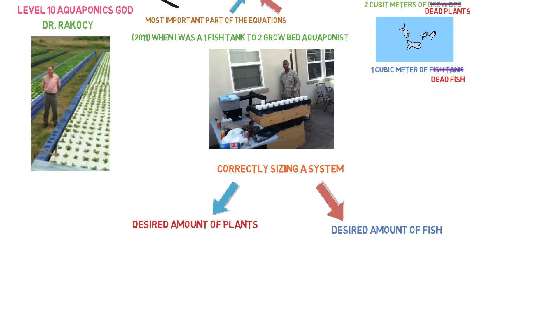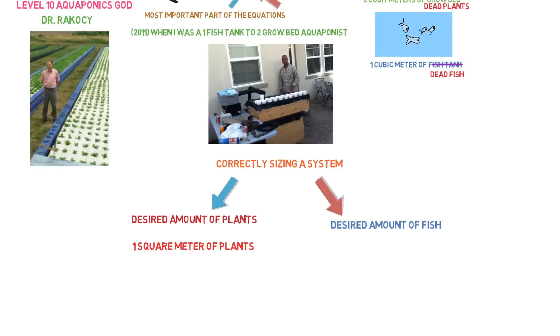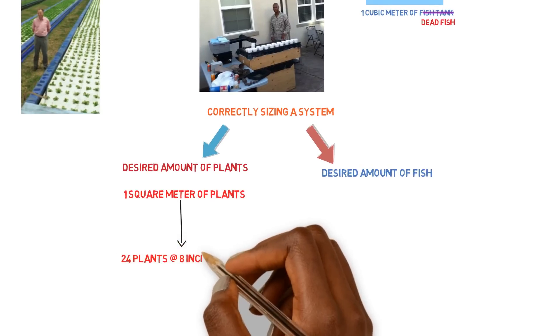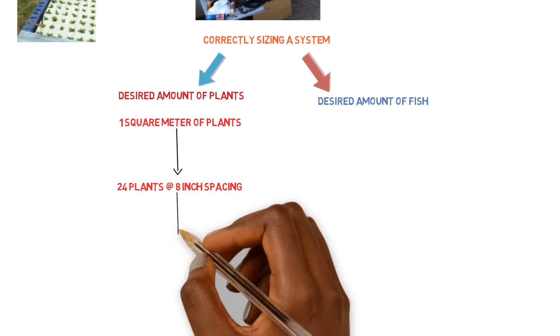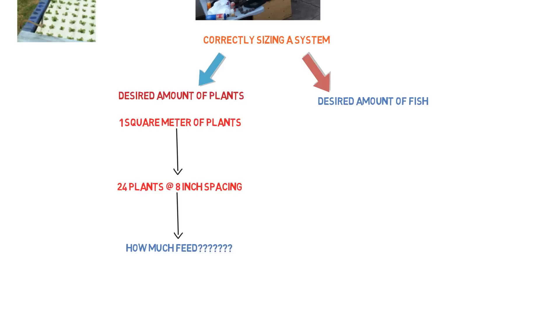So we can base it off of the amount of plants that we want to grow. We want to grow X amount of plants. Let's say we're going to grow one square meter of plants, which we'll say is 24 plants per square meter at eight-inch spacings, and we can work backwards from there. Now we need to figure out how much feed input is required to supply nutrients to one square meter of plants. This is what we need to find out.